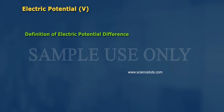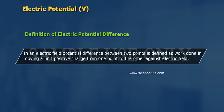Definition of electric potential difference: In an electric field, potential difference between two points is defined as work done in moving a unit positive charge from one point to the other against electric field.